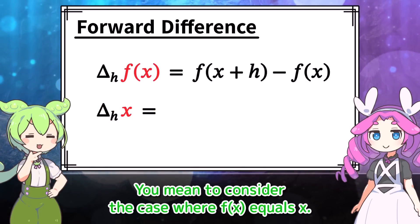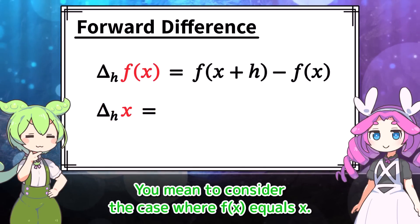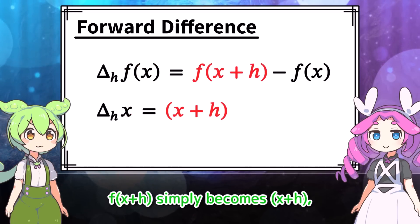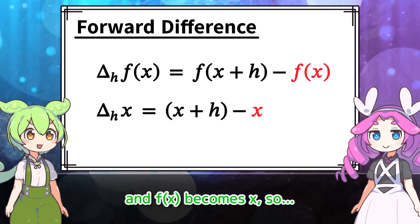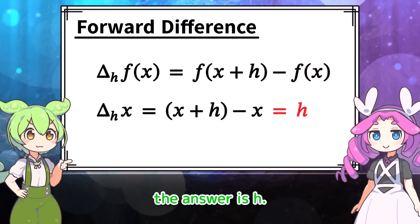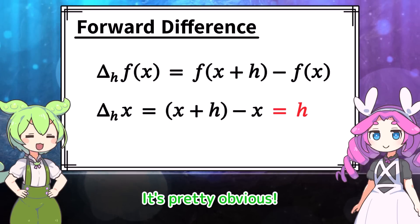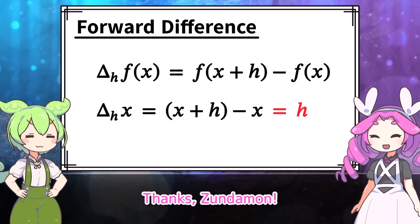You mean to consider the case where f of x equals x? Then f of x plus h simply becomes x plus h, and f of x becomes x, so the answer is h. Well, if you move x by h, the change in x is h — it's pretty obvious.